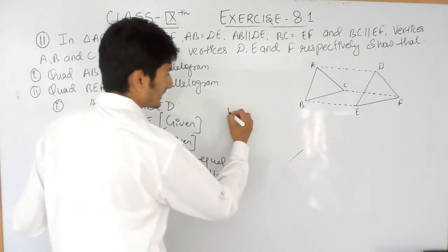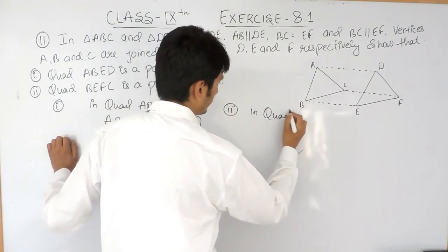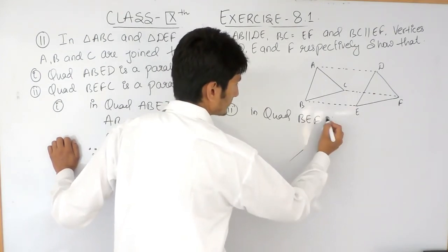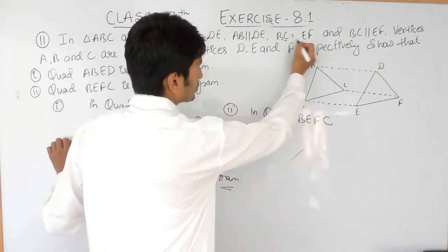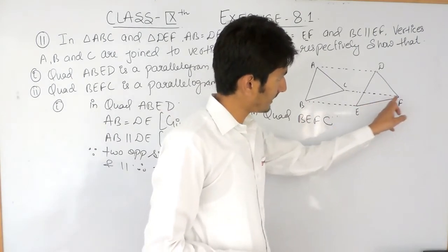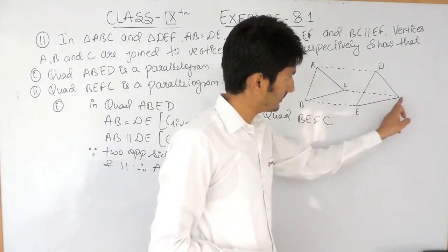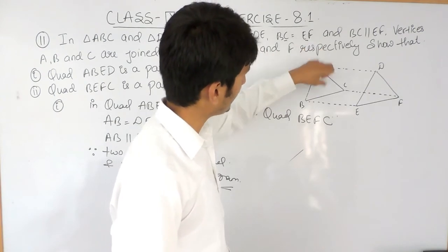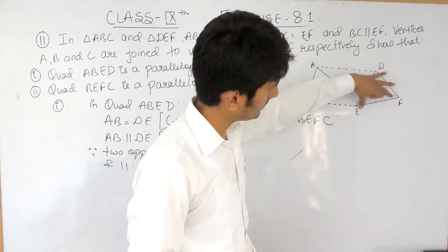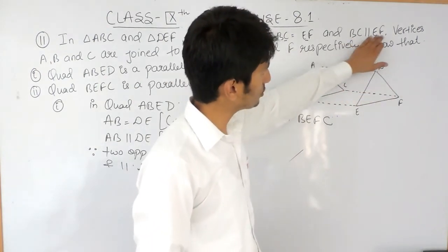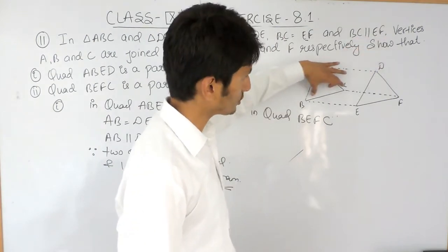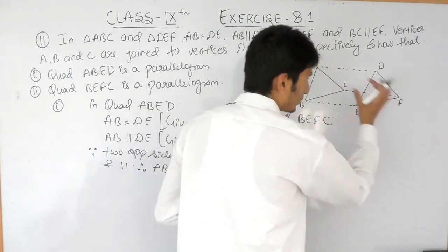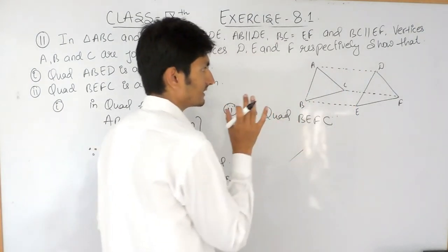Similarly, you can prove the second one also. The second quadrilateral is BEFC. In this quadrilateral, side BC is given equal to EF — so these two sides are equal. Similarly, these two sides are also given parallel. So in this closed four-sided figure, if two opposite sides are equal and parallel, then it is a parallelogram.